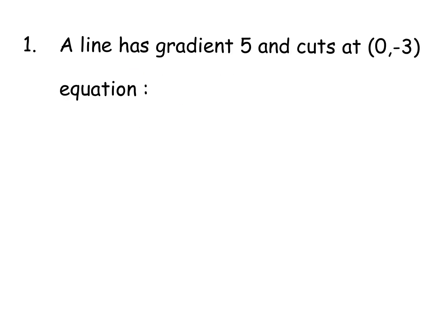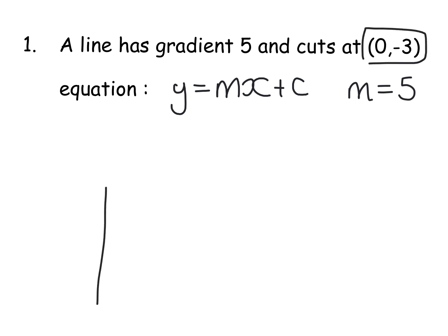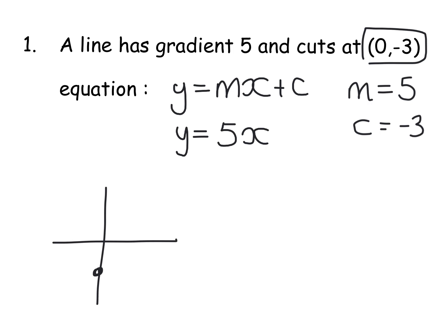Example one: a line has a gradient of 5 and cuts at (0, -3). I'll write the general equation y equals mx plus c. My gradient is 5, so m equals 5. The coordinate (0, -3) means along 0, down 3 — that's my y-intercept, so c equals -3. Substituting: y equals 5x minus 3. I don't need to write plus minus 3; if the y-intercept is negative, just make it minus 3. A quick sketch: it cuts at -3 on the y-axis, and with gradient 5 positive it's an upward sloping line.